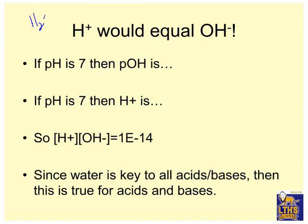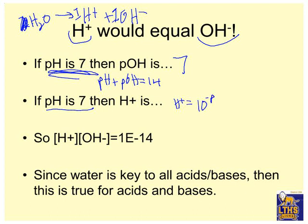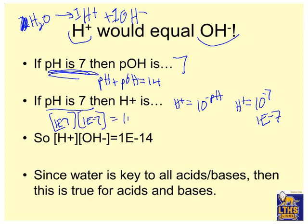Now if I had H₂O — making it a little simpler — 2H₂O makes H⁺ plus OH⁻. And wouldn't I make exactly 1 H⁺ and exactly 1 OH⁻? Yeah, so H⁺ would equal OH⁻. And if pH is 7, then POH is 7, because pH plus POH equals 14. If pH is 7, then H⁺ equals 10 to the negative pH, so H⁺ equals 10⁻⁷, or 1 × 10⁻⁷. So H⁺ times OH⁻, which is 1 × 10⁻⁷ times 1 × 10⁻⁷, equals 1 × 10⁻¹⁴.